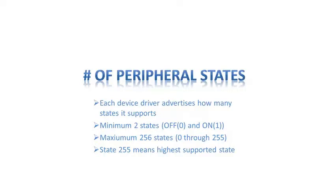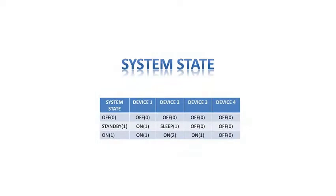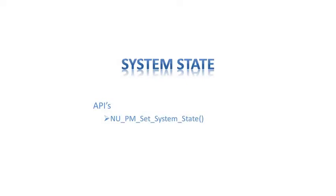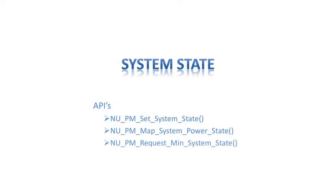Even though the setState command can be issued against each individual device, it is much more efficient to define system states. A system state is simply a defined set of peripheral states. For example, with three system states — off, standby, and on — a device state is mapped to each. For system state 1 (standby), device 1 is on, device 2 is sleep, device 3 is off, and device 4 is off. Once system states are defined, switching between them is as simple as calling the NupmSetSystemState API. There is also a corresponding GetSystemState API, a NupmMapSystemPowerState API to map additional devices, and NupmRequestMinimumSystemState, which will be discussed further.